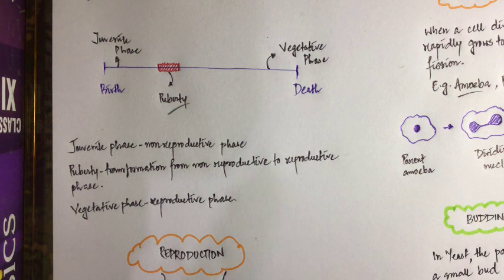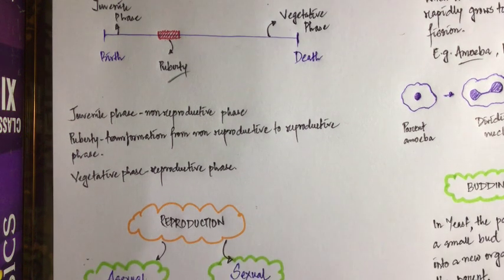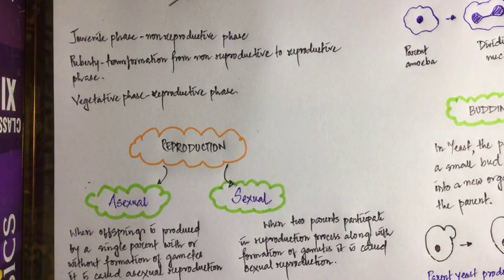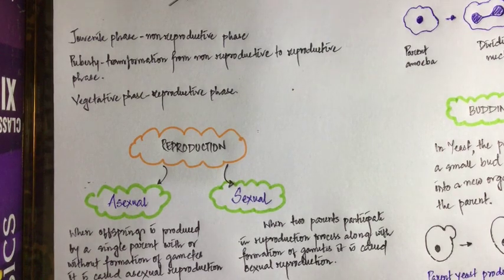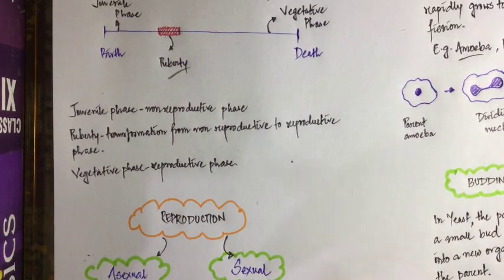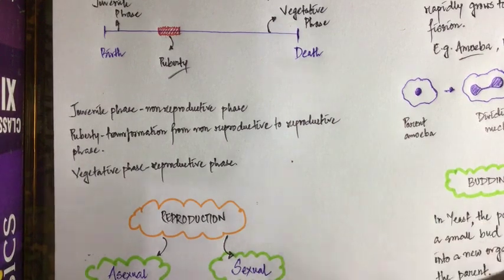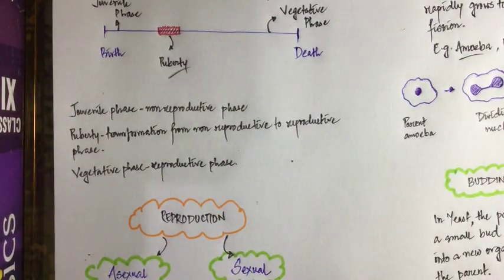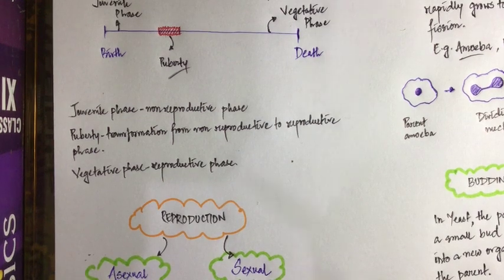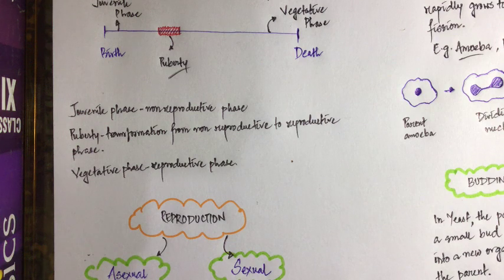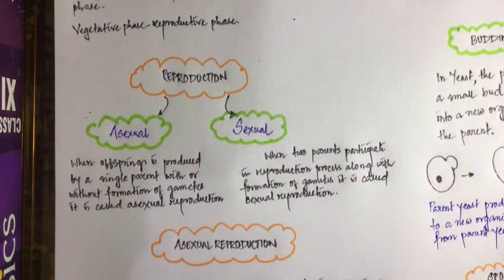After puberty till the death of an organism is called the vegetative phase. The juvenile phase is the non-reproductive phase — the phase in which the organism cannot reproduce. Puberty is basically the transformation of an organism from the non-reproductive phase to the reproductive phase. The vegetative phase is the phase where the organism is reproductively active and can reproduce to produce new organisms.